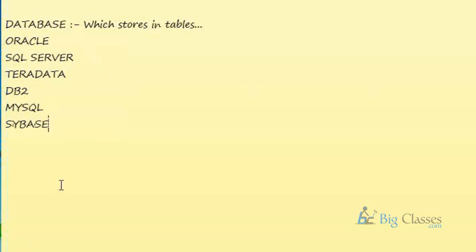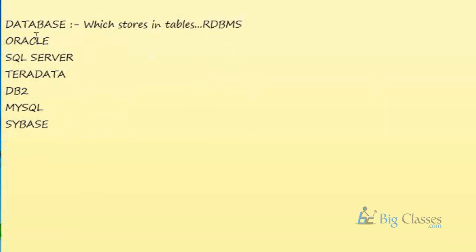We also have DB2, Sybase, and many other types of databases. All these databases store data in tables, and there is a relationship between one table and another. That is why we call it a DBMS — in technical terms, an RDBMS, which stands for Relational Database Management System.